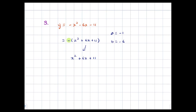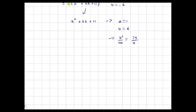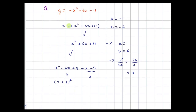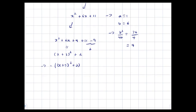So we have x² + 6x + 11, and now a = 1 and b = 6. So b²/4a = 36/4 = 9. I'm going to add and subtract 9, getting x² + 6x + 9 + 11 − 9. The 11 − 9 becomes 2, and x² + 6x + 9 is the perfect square (x + 3)². So we have (x + 3)² + 2 — that was a nice result because the a value was 1 after factoring out the negative.